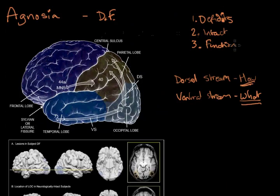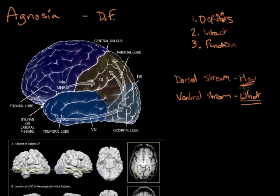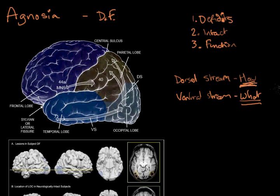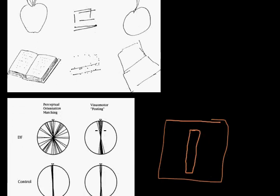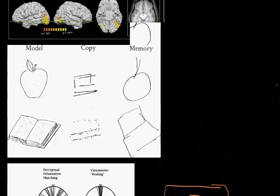And so when she was asked to just turn the envelope and post it, in that case, the dorsal stream came into play, and she was able to orient the card and post it straight through.